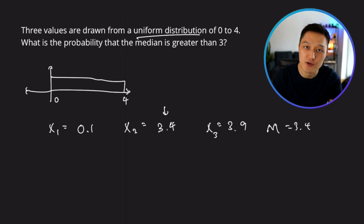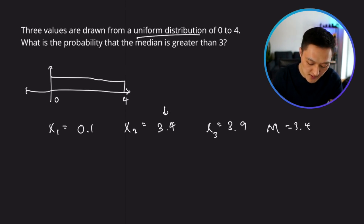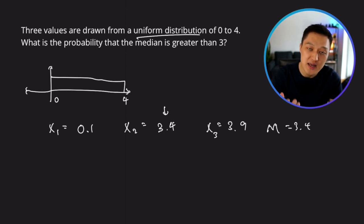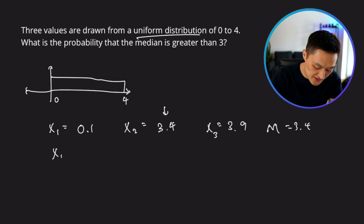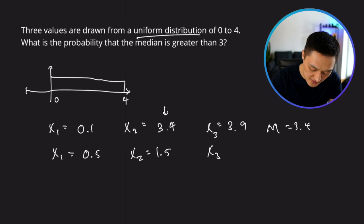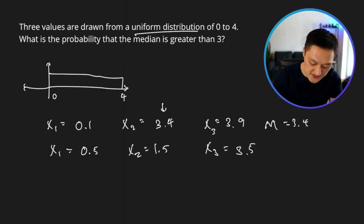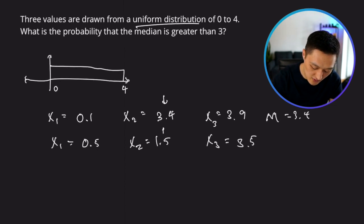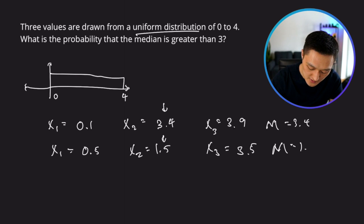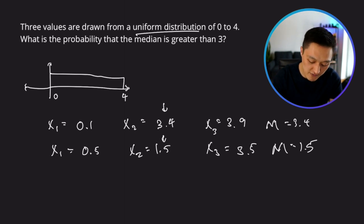This is an example of what we're looking for. Now if we were to do thousands and tens of thousands of simulations like this, how many of those outcomes are going to have a median value greater than 3? Consider this other type of outcome: suppose x1 is 0.5, x2 is 1.5, x3 is 3.5. The median value for this set is 1.5 — and in this particular instance, we have a failure case. This doesn't satisfy the condition we're looking for, which is that the median is greater than 3.